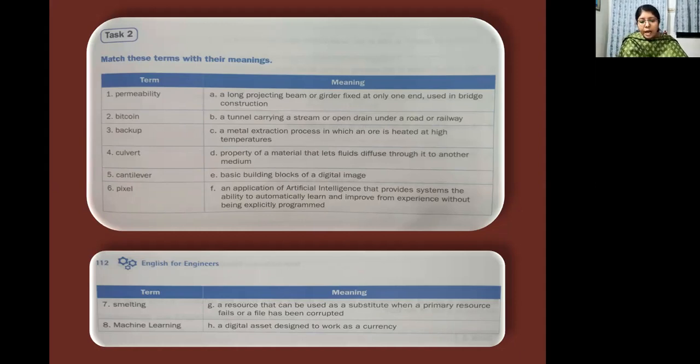And then you have smelting. Now, smelting, what is the meaning? A metal extraction process. That is C. Smelting matches with C. A metal extraction process in which an ore is heated at high temperatures. Next, we have machine learning. So what is the meaning of the word machine learning? So the answer is F. An application of artificial intelligence that provides systems the ability to automatically learn and improve from experience without being explicitly programmed. So these are the meanings.